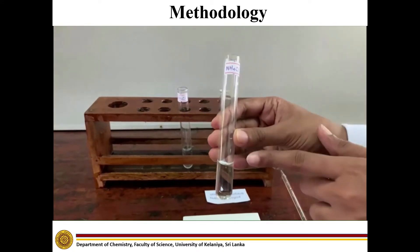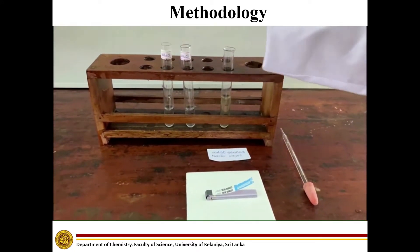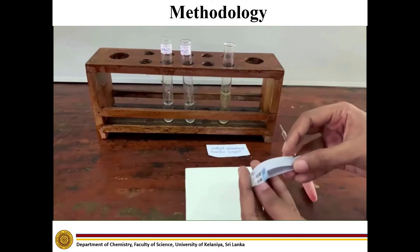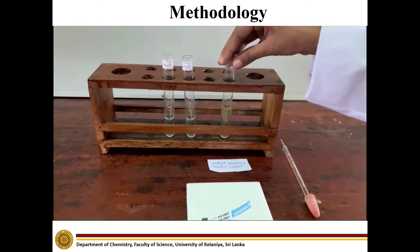For the third step, take a dilute solution of ammonia and test with litmus paper and a few drops of Nessler reagent.